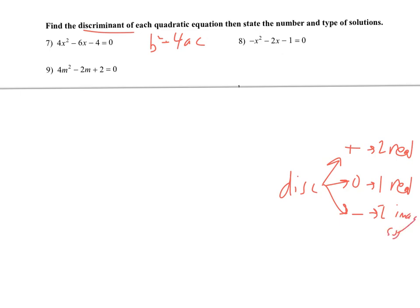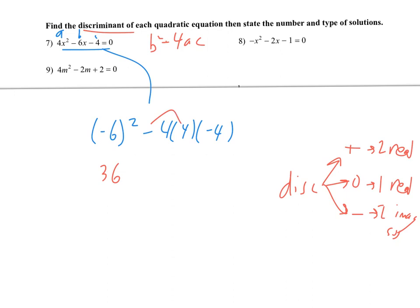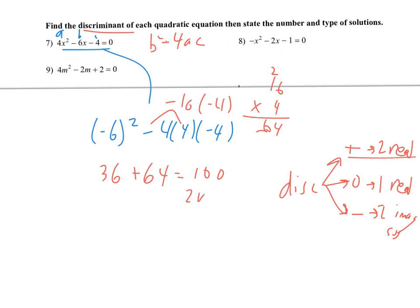So I'll go ahead and do number 7. This one we'll do b squared — b here is negative 6 — minus 4 times a, which is 4, and c is negative 4. So this will turn into 36, and then this will be negative 16 times negative 4, which is 64. It'll be plus 64 since that was a negative times a negative. So this will be 100. And since that is positive, it means two real solutions.